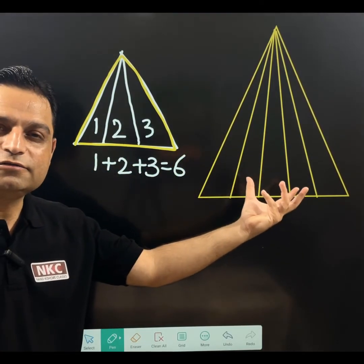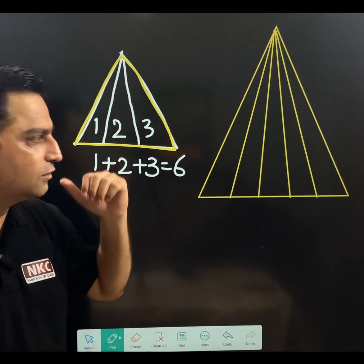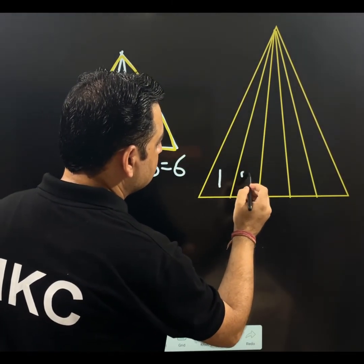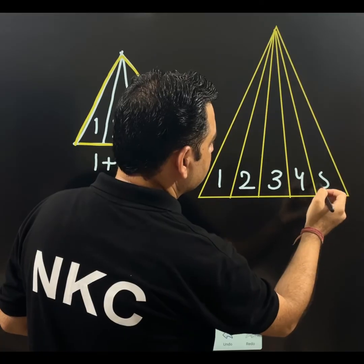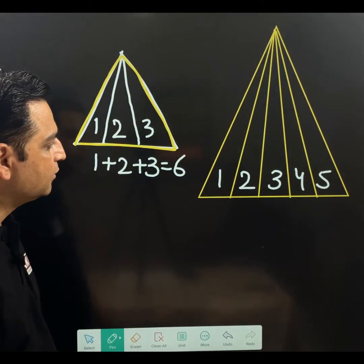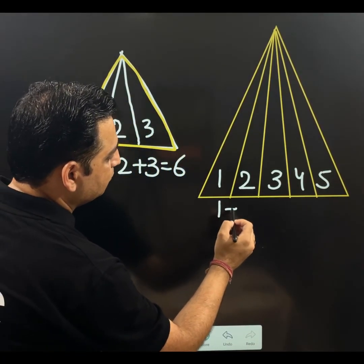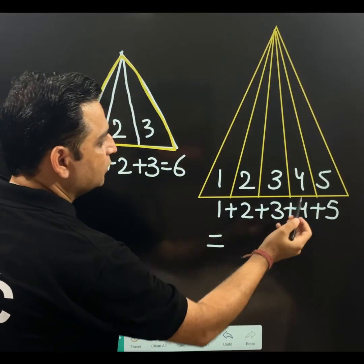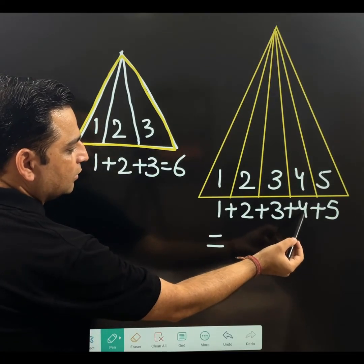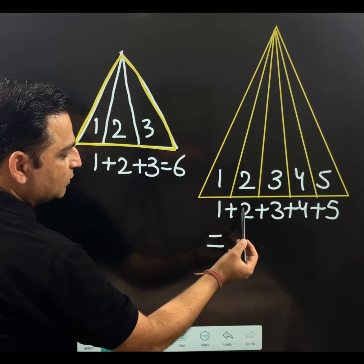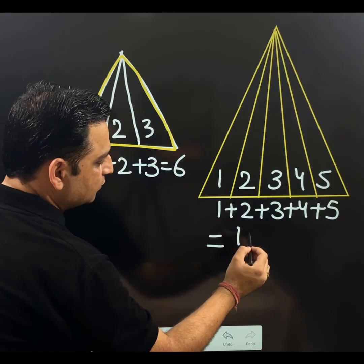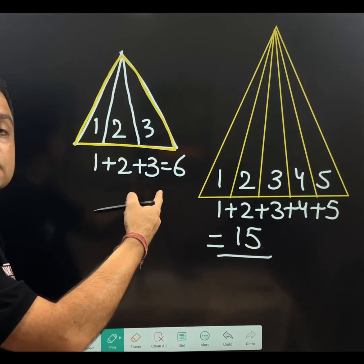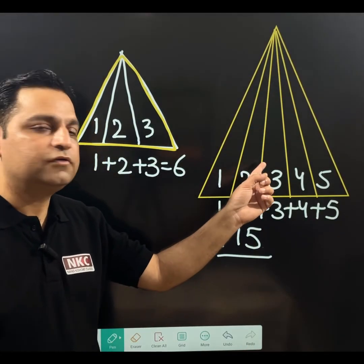Now, counting the number of triangles for this diagram is going to be very easy. Let me write 1, 2, 3, 4 and 5. Just add them. What will happen? 1 plus 2 plus 3 plus 4 and plus 5. What is the count? 5 plus 4 is 9. 9 plus 3 is 12. 12 plus 2 is 14. 14 plus 1 is 15. So, total number of triangles will be 15 in this diagram.